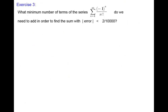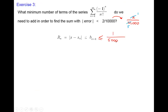Next example: what minimum number of terms of the series negative one to the n over n factorial do we need to add in order to find the sum with the error less than 2 over 10,000? Simplifying: two over 10,000 reduces to one over 5,000. So the error must be less than or equal to one over 5,000. The formula for B sub n is one over n factorial — positive, decreasing, limit zero — so the series is convergent.